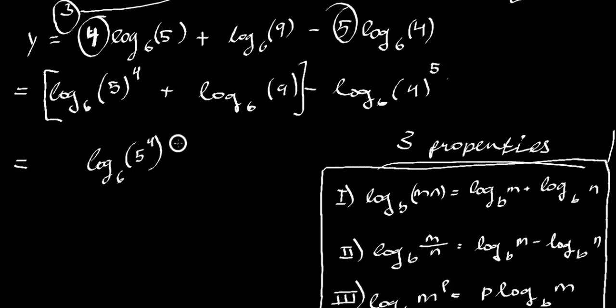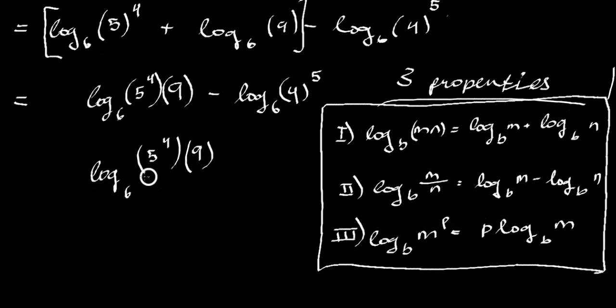I'm not going to actually calculate this because I'm very tired. We still have minus log 6, 4 to the 5th. So we are subtracting two things. What is that? Well it's the ratio. Put it as a fraction. And then we have 5 to the 4th times 9 over 4 to the 5th. Don't worry about the arithmetic. I think you would get a fraction. This is your final answer.